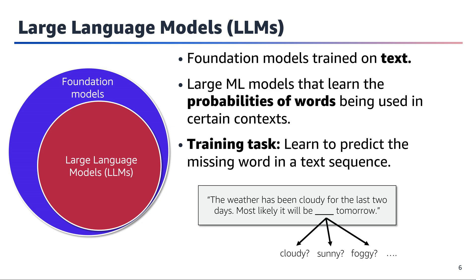Large language models, LLMs, are foundation models trained on text data. They are large machine learning models that learn the probabilities of words being used in certain contexts. The training task for these models is to learn to predict the missing word in a text sequence or predict the next word given a phrase. For example, given the sentence 'The weather has been cloudy for the last two days. Most likely it will be blank tomorrow,' the model would need to predict the appropriate missing word, such as cloudy, sunny, foggy, etc., based on the context provided.